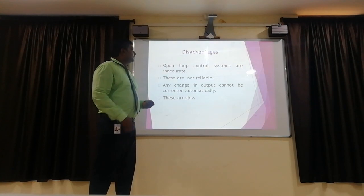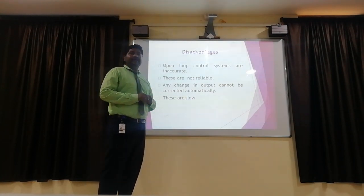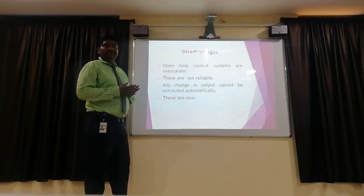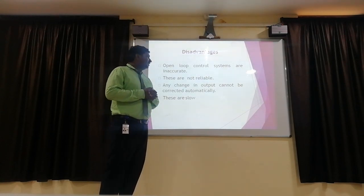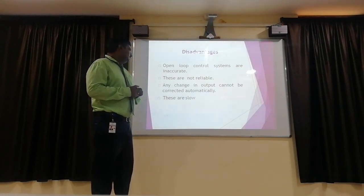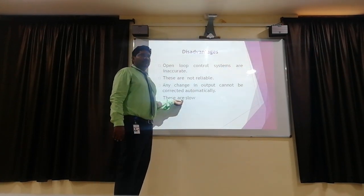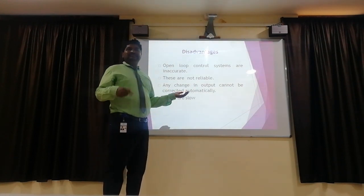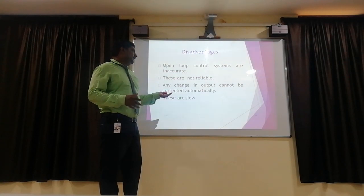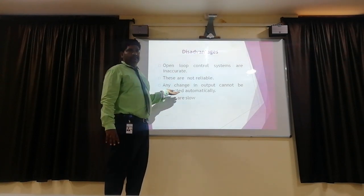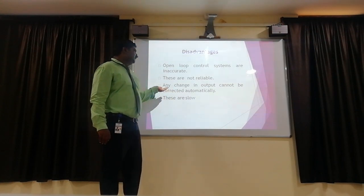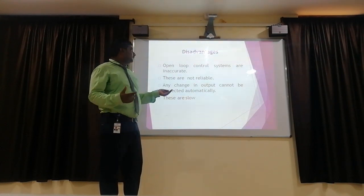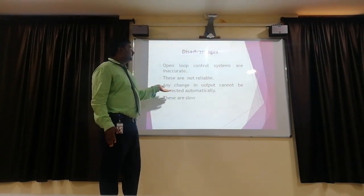Disadvantages of the open loop control system: open loop control systems are inaccurate and not reliable. They have slow processing operation. Any changes in output cannot be corrected automatically — correction must be done manually. That is a key limitation of the open loop control system.